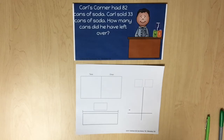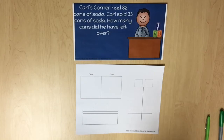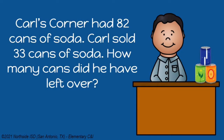Students are also expected to subtract two two-digit numbers using the standard algorithm. To support students' understanding of the standard algorithm, a place value chart and a pictorial representation will be used to represent the subtraction. A strip diagram is also used to represent the knowns and unknowns. Let's look at this real-world scenario: Carl's Corner had 82 cans of soda. Carl sold 33 cans of soda. How many cans did he have left over?